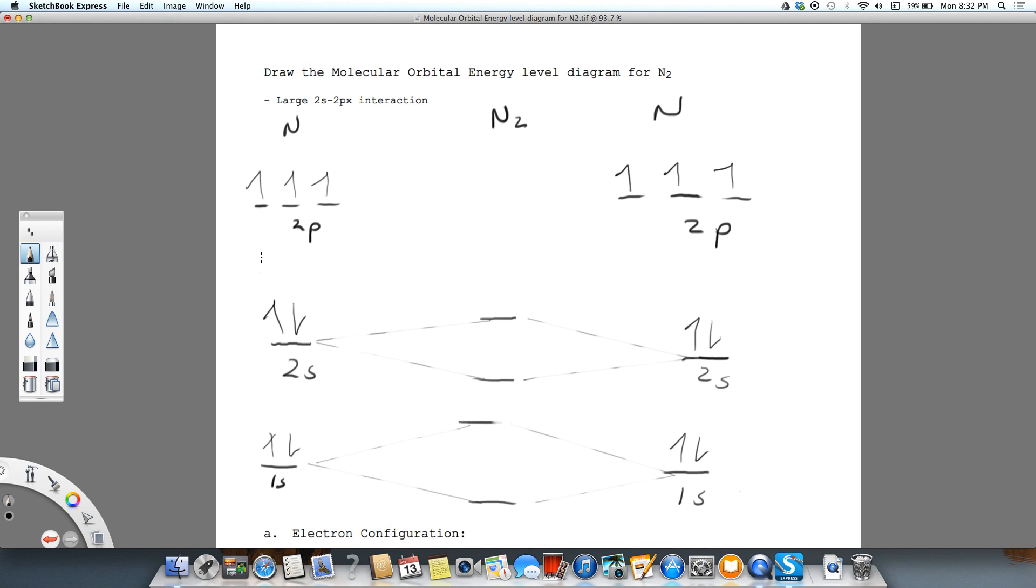We're going to draw the molecular orbital energy level diagram for N2. I've already pre-drawn some of our orbitals to save time. You know that nitrogen has 1, 2, 3, 4, 5, 6, 7 electrons.